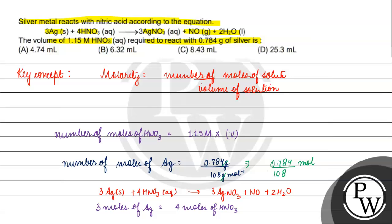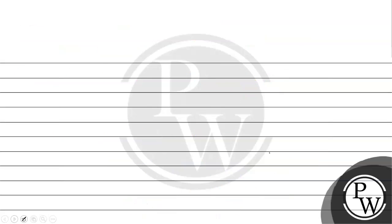If we have 1 mole of silver, how much HNO3 will we need? It will be 4 by 3 moles of HNO3.